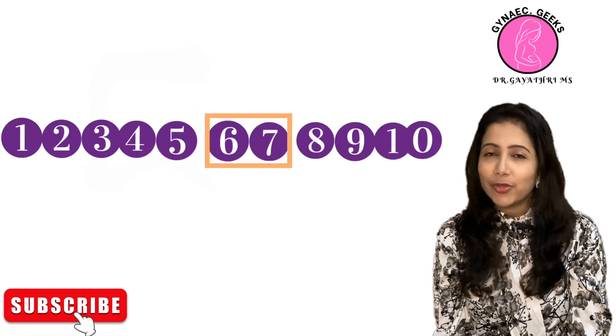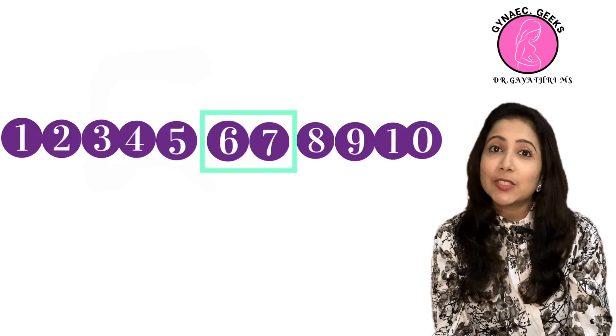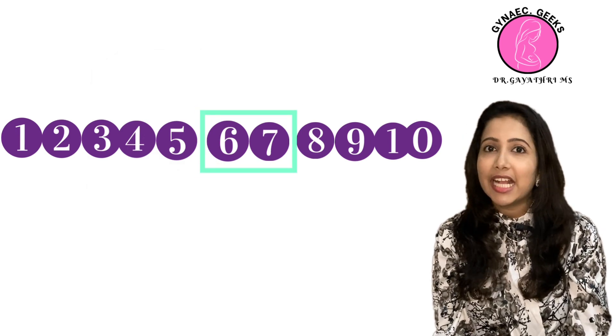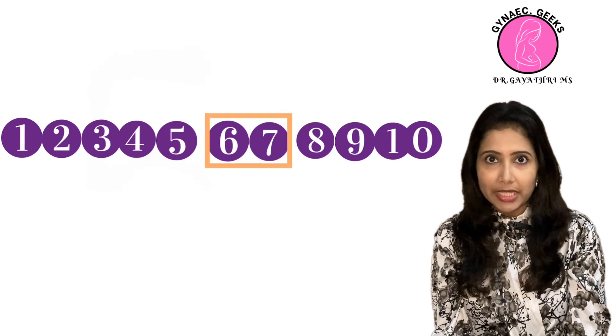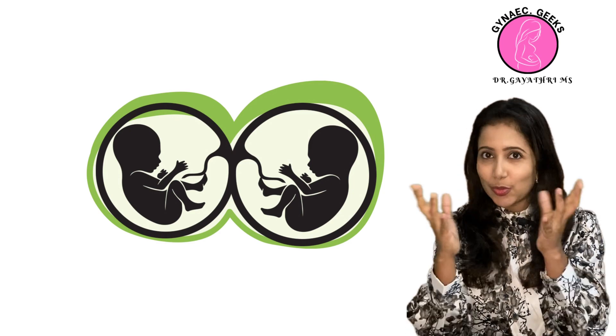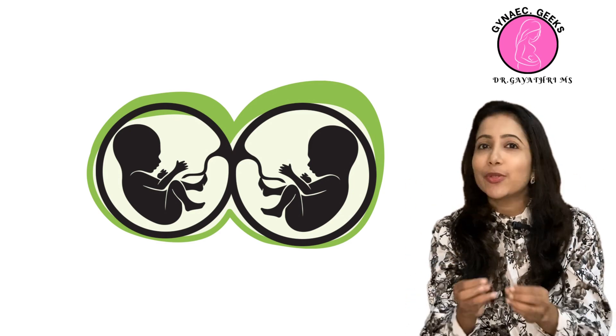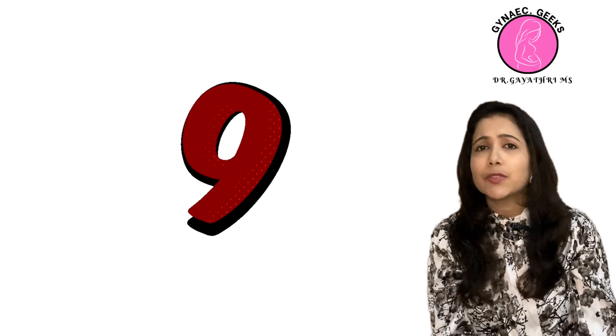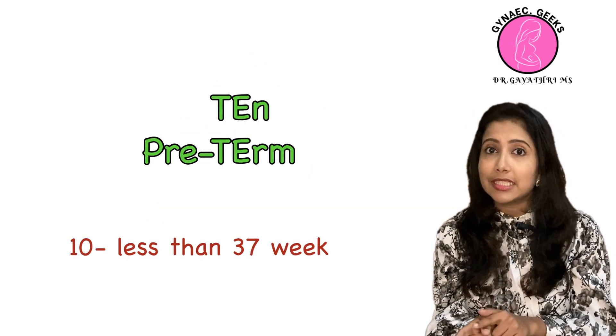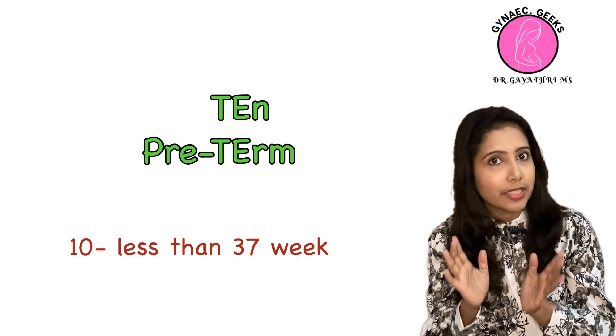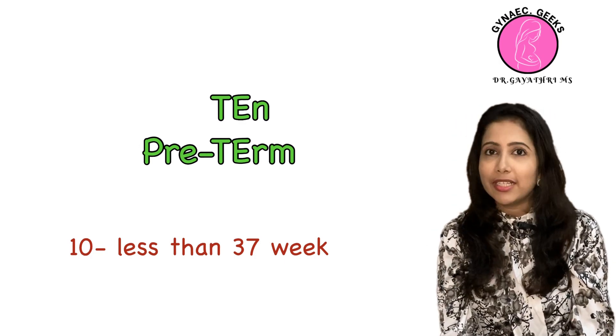Groups 6 and 7 are for breech presentation — 6 for nulliparous and 7 for multiparous. Group 8 has two cavities inside, representing multiple pregnancies. Group 9 is for all abnormal presentations. Group 10 is for anything less than 37 weeks — all singleton pregnancies under 37 weeks fall under Robson 10. Hopefully these tips make it easy to answer any question on the Robson score in the future.